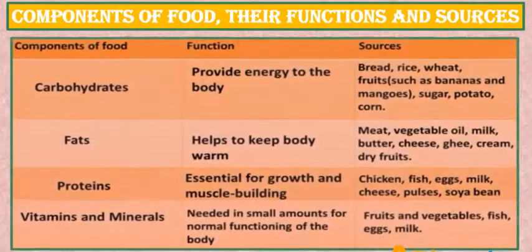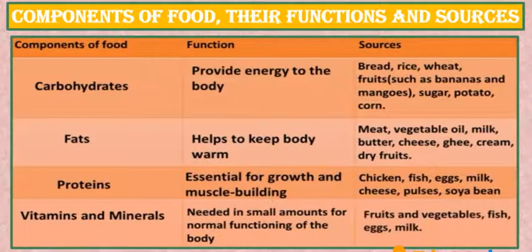The very first component is carbohydrates. Carbohydrates provide energy to our body and the sources of carbohydrates are bread, rice, wheat, fruits, sugar, potato, corn, etc.